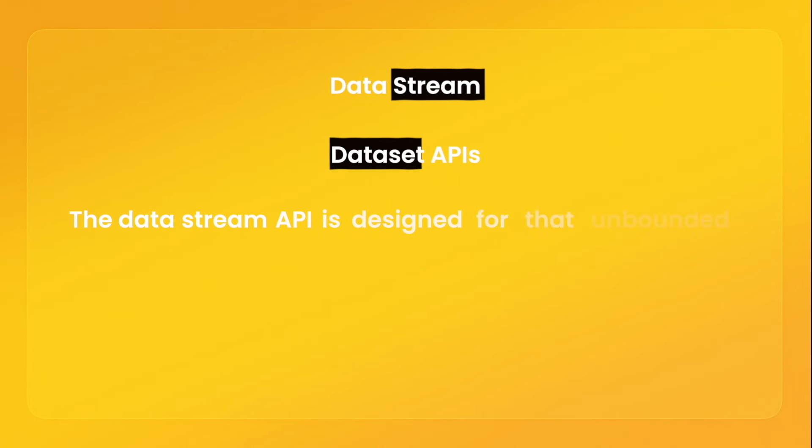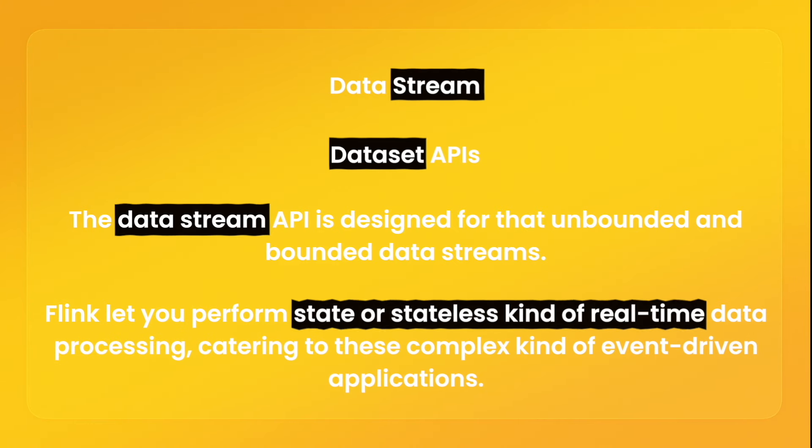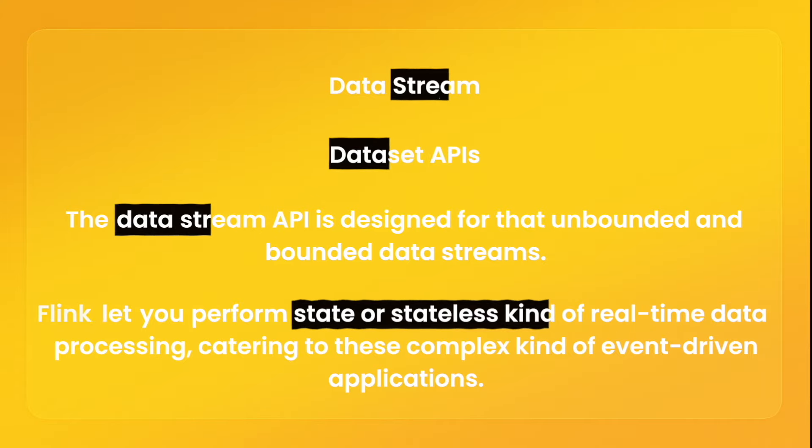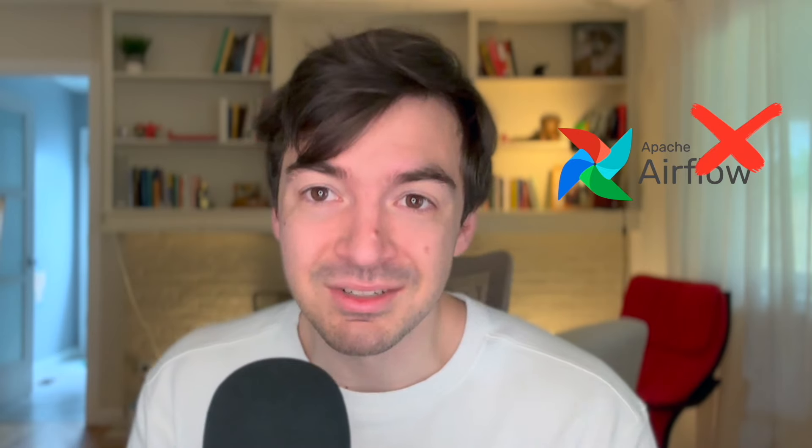The features you see in Apache Flink include its DataStream and Dataset APIs. The DataStream API is designed for unbounded and bounded data streams, letting you perform stateful or stateless real-time data processing, catering to complex event-driven applications. When data is fired off, you can process it versus waiting for it to be in batch. For example, Airflow is not built to handle event-driven architecture at scale — maybe if you're doing 10 events an hour, but at thousands of events per second, it's just not meant for it.